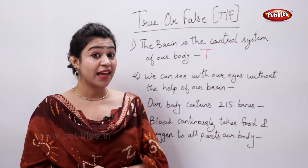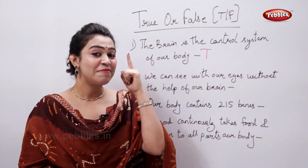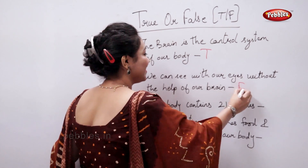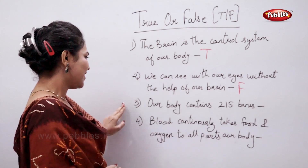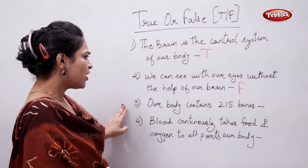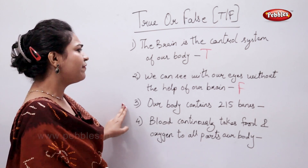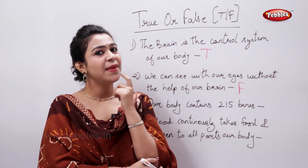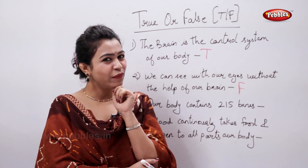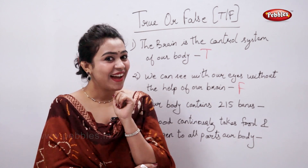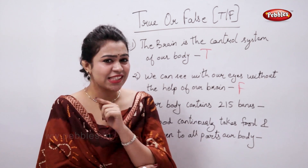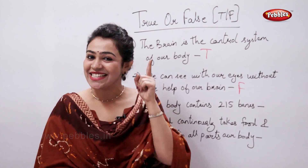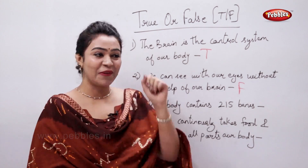We cannot see with our eyes without the help of our brain. Our body contains 215 bones — is it true or false? False! Our body contains 206 bones.